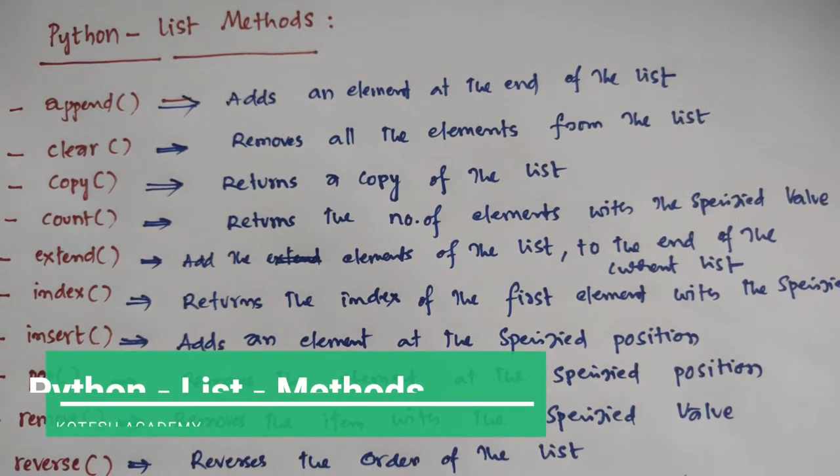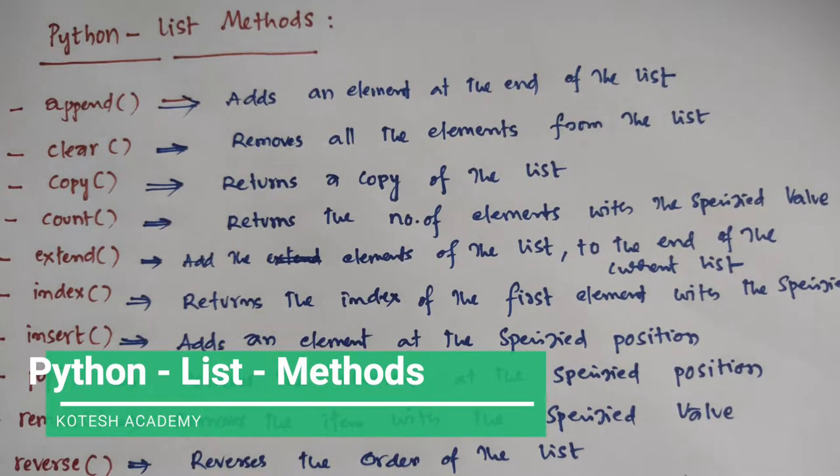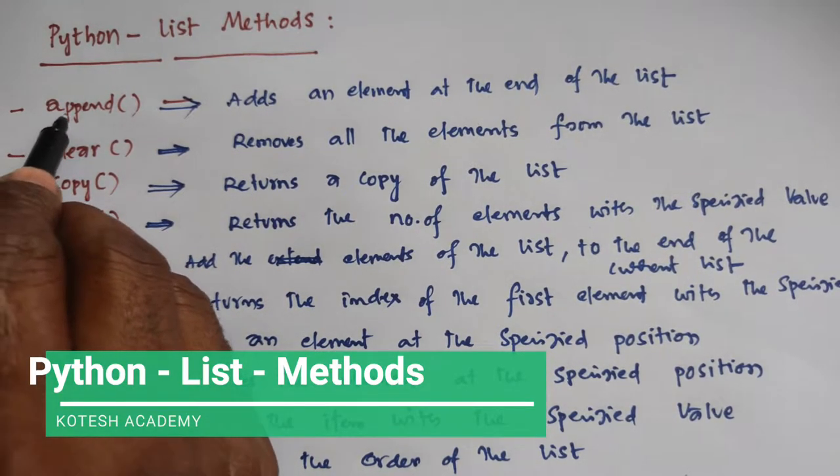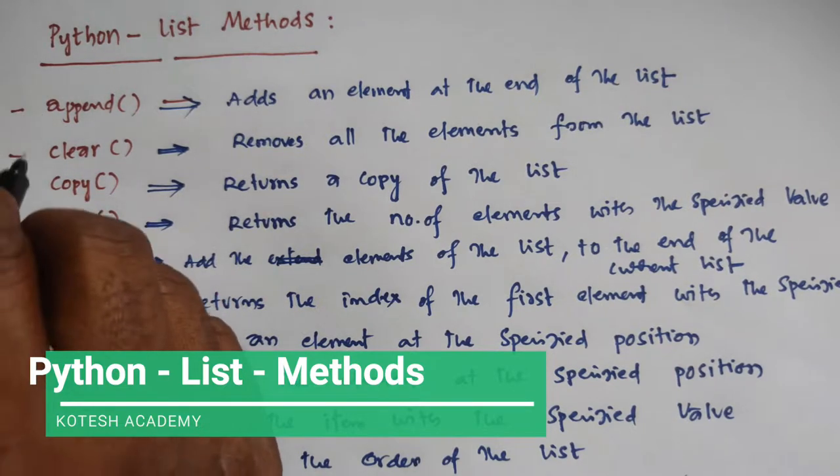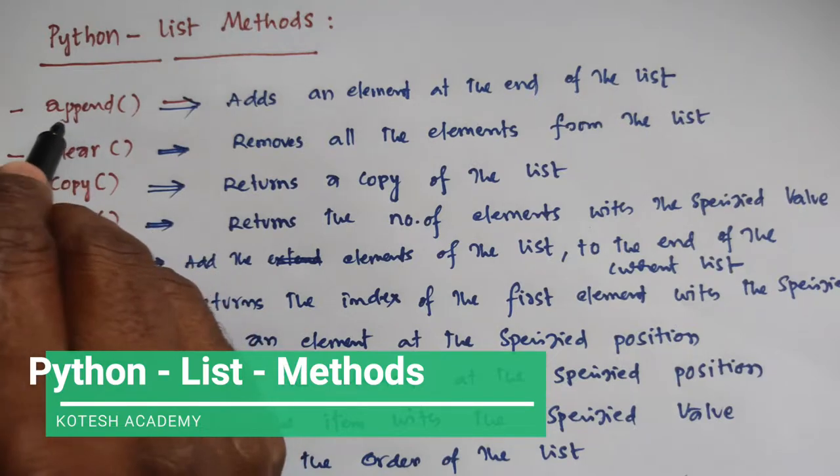Hi friends, based on previous videos, we are going to review all the various types of list methods. A list is always represented by square brackets. There are various types of methods.